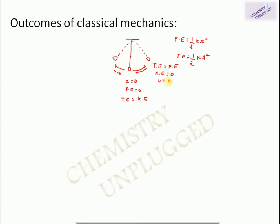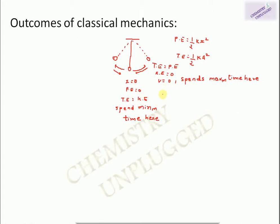Because kinetic energy = ½mv², velocity is zero at maximum displacement. When a particle has zero velocity, it spends maximum time at that position, so in simple harmonic oscillation the particle spends maximum time at the extreme positions. At the equilibrium position, velocity is maximum and the particle spends minimum time there. These are the main outcomes of classical mechanics.